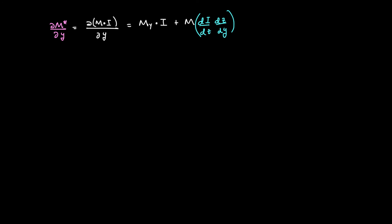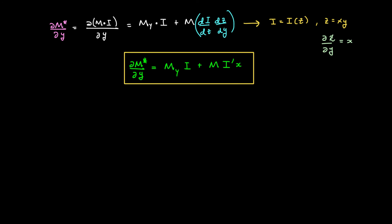Now, remember that i is equal to i of z, where z equals x times y. So if we take the partial derivative of i with respect to y, we apply the chain rule: di/dy equals di/dz times dz/dy. Since z equals x times y, dz/dy equals x. So we find that the partial derivative of M* with respect to y equals ∂M/∂y times i, plus M times i′ times x, where i′ is di/dz.